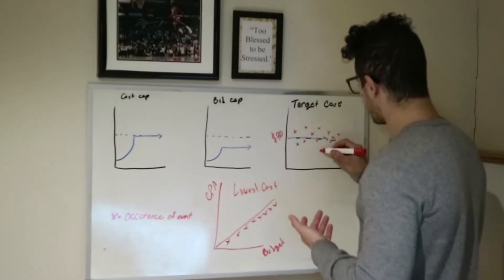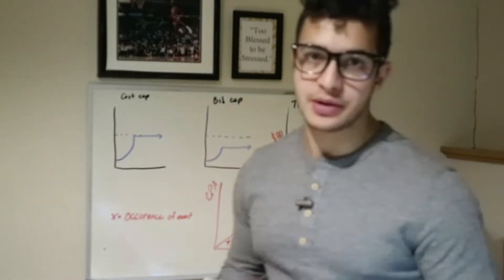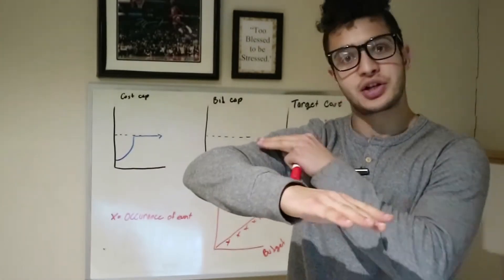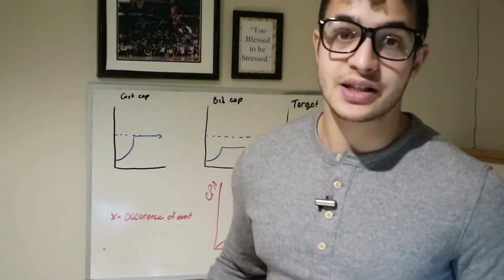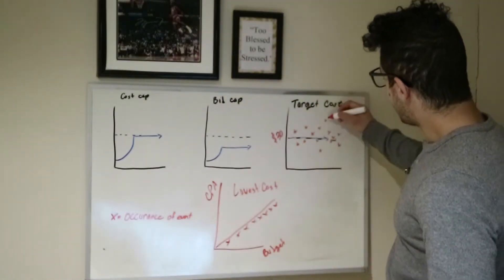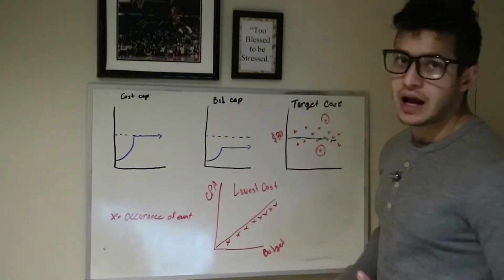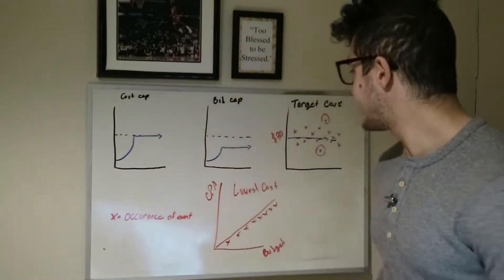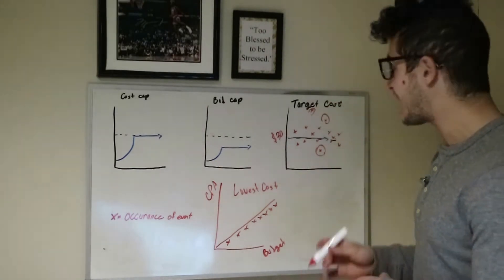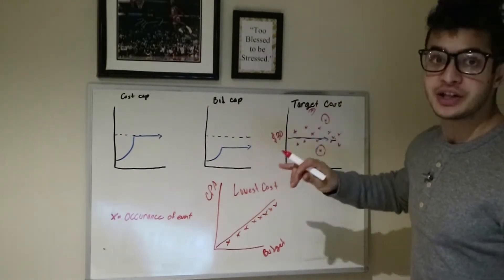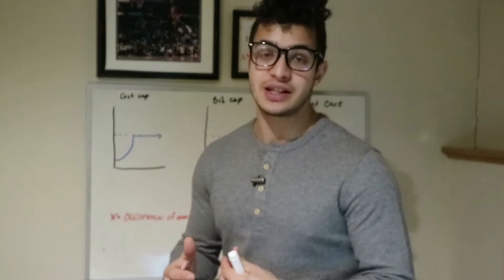Sometimes you might even get a straggler that goes down or over. Pretty much what the algorithm aims to do is keep a straight path throughout the entire thing, trying to keep the target steady. What I usually see when I test this is stragglers mainly on the higher end, so the average tends to be on the higher end of your budget.